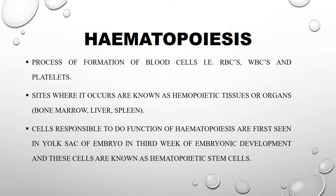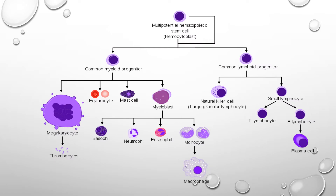Hematopoietic stem cells are divided into two categories: common myeloid progenitor cells and common lymphoid progenitor cells. In the common myeloid progenitor cells, megakaryocytes are present in bone marrow. Platelets and thrombocytes are disc-shaped cells. Erythrocytes are red blood cells. Myeloid progenitor cells are further divided, including basophils, which are granulocytes and white blood cells.